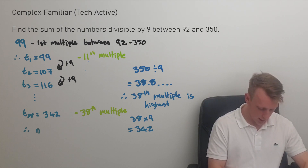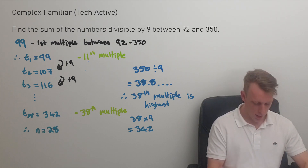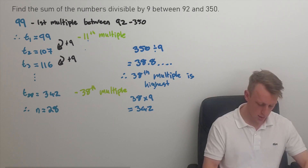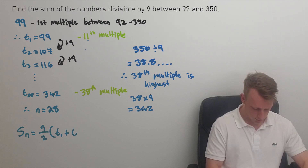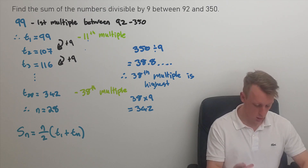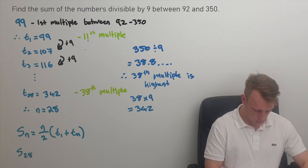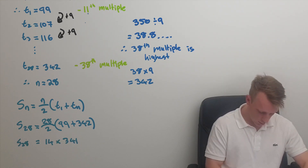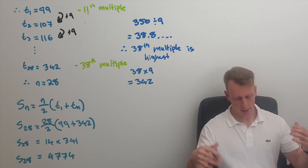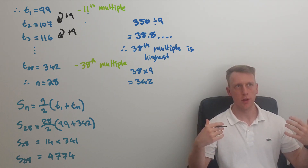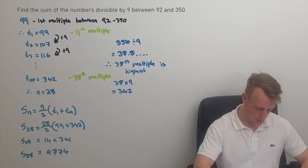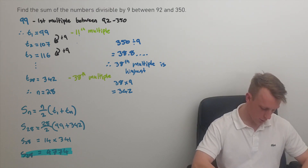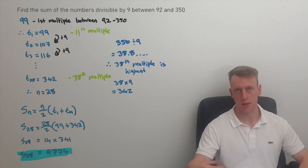With n equal to 28, we use the arithmetic sum formula from the formula sheet. Plugging in the known values — n equals 28, first term and common difference — we calculate the sum. Therefore, the sum of all numbers divisible by nine between 92 and 350 is 4774.